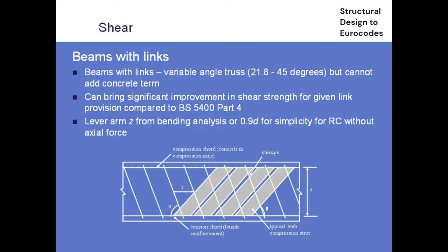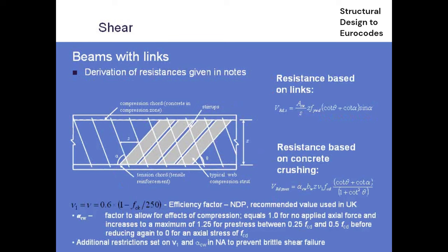The key thing is that this choice of truss angle is entirely the designer's - you can choose whatever you like between 45 degrees and 21.8 degrees, but then you have to live with the various consequences because it follows through in lots of different formulae. The Eurocode also allows you to incline your shear links for further economy, with the optimum angle being 45 degrees inclination. However, don't do this for bridge works because it's thoroughly impractical to construct - you end up with links poking through construction joints. Vertical links are still recommended.